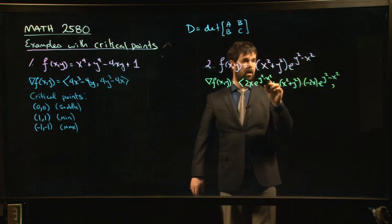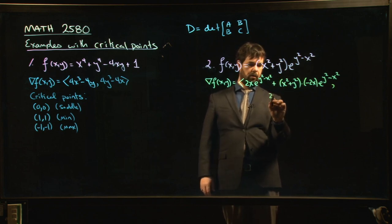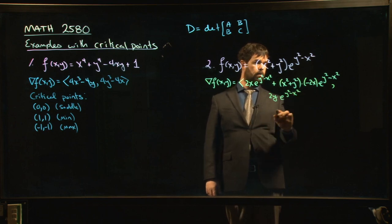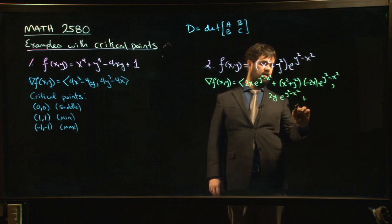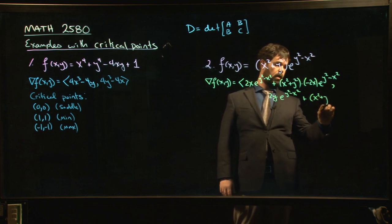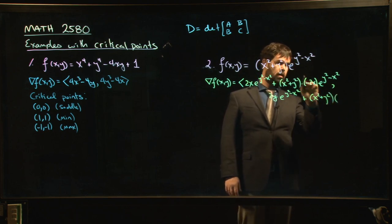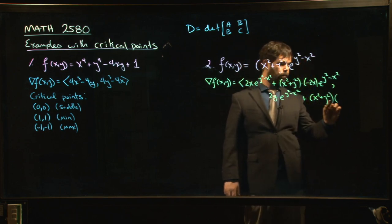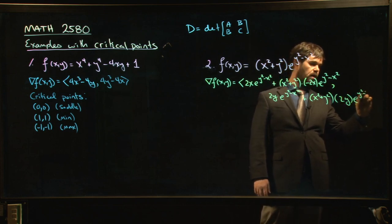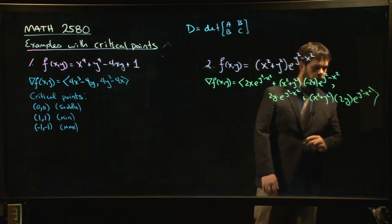For the y-derivative, it looks pretty similar: 2y e^(y²−x²) plus x²+y² times, taking the y-derivative via chain rule, 2y e^(y²−x²). We want this gradient to be zero.